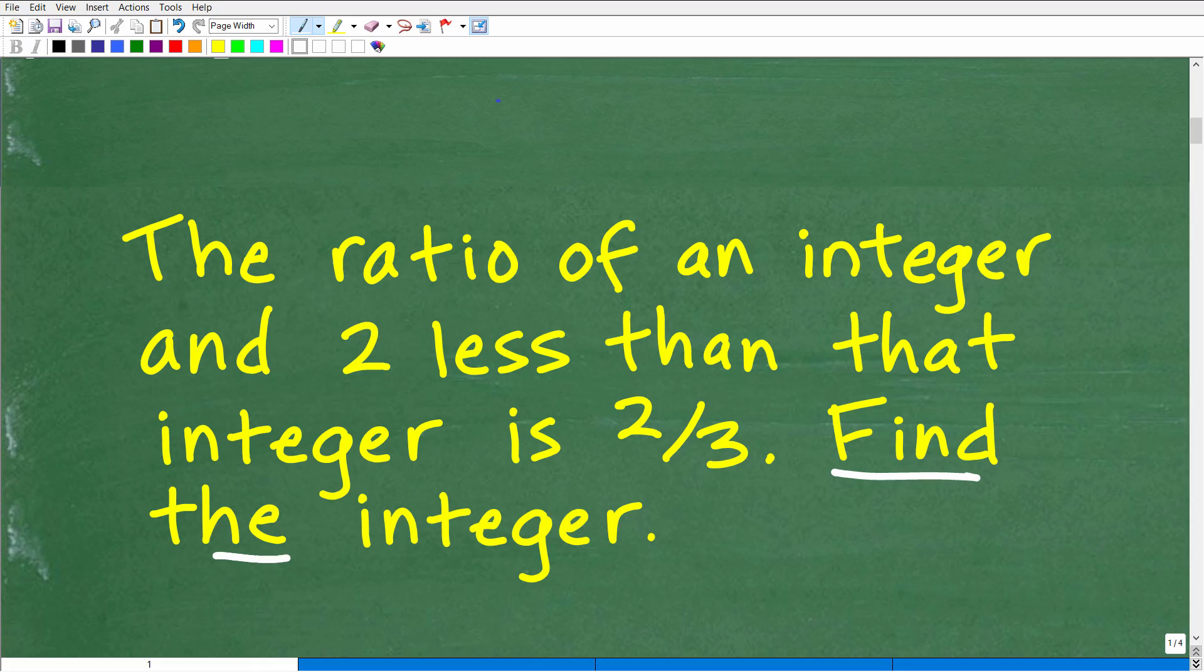Here we want to find the integer. So we have the ratio of an integer and two less than that integer is two-thirds. Find the integer. Now let's talk about these words here, ratio and integer.